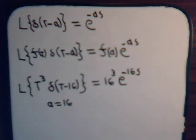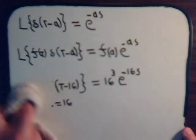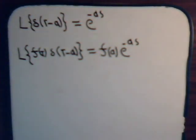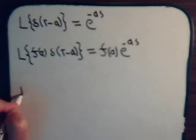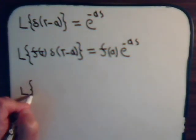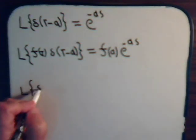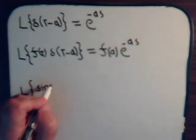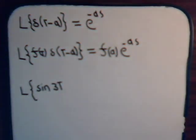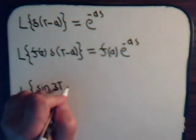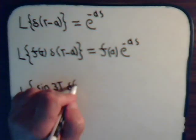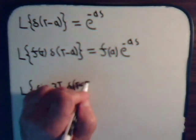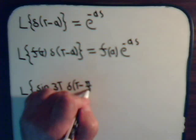Let's take a couple more examples. These will all be very straightforward; there shouldn't be any difficulty in dealing with them. Suppose we have the Laplace transform of the sine of 3t, multiplied by the Dirac delta function of t minus pi over 2.